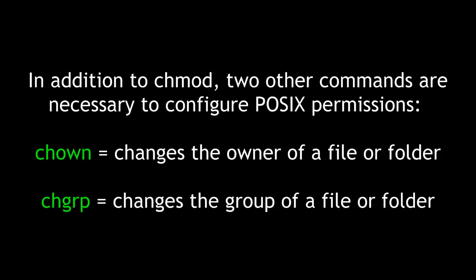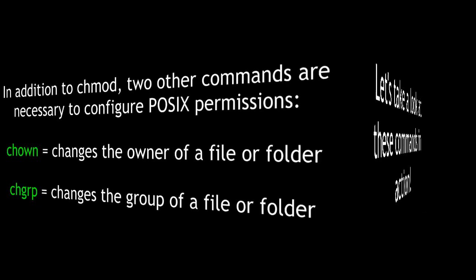In addition to chmod, two other commands are necessary to configure POSIX permissions: chown, which changes the owner of a file or folder, and chgrp, to change the group of a file or folder. Let's take a look at these commands in action.